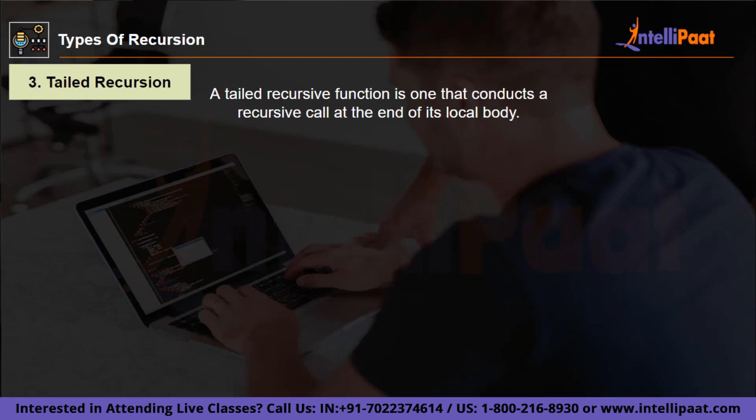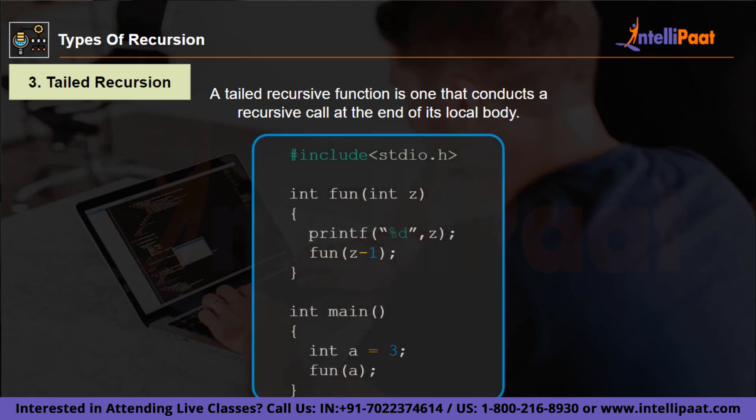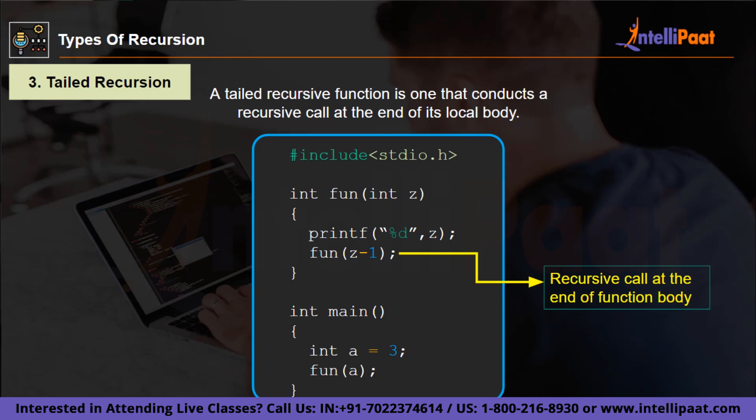Then we have another type of recursion called tailed recursion, also known as bottom recursion. The recursive function is essentially used as the function's final statement in a tailed recursion. Therefore, tailed recursion is what happens when nothing remains to be done after returning from the recursive function. As you can see in this example, we have two functions: the fun function and the main function. Inside the fun function, the last line is the recursive call at the end of the function body.